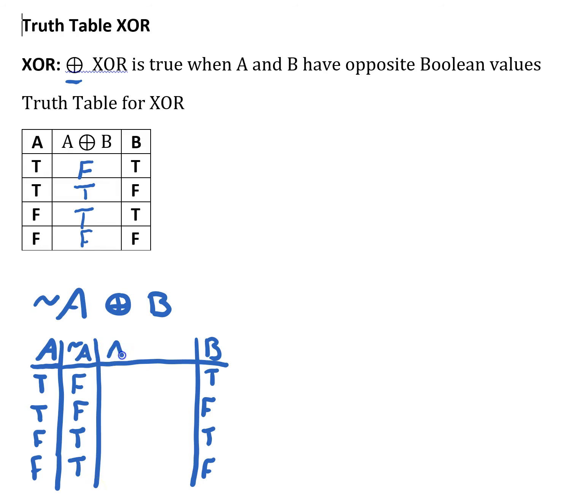For the last column, I'm doing NOT A XOR B. We're going to take a look at the two columns, one column labeled NOT A and one column labeled B, and decide when the two columns have opposite boolean values.